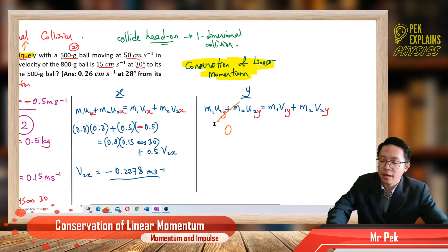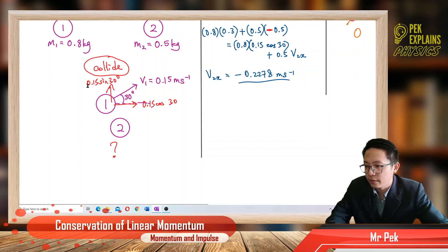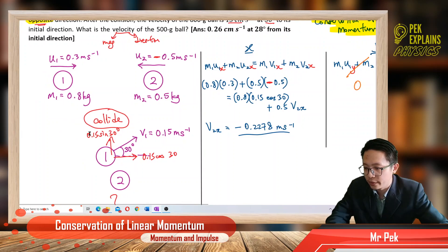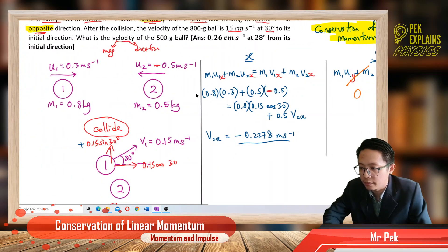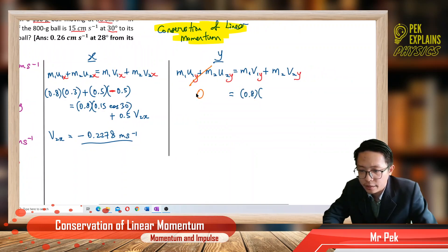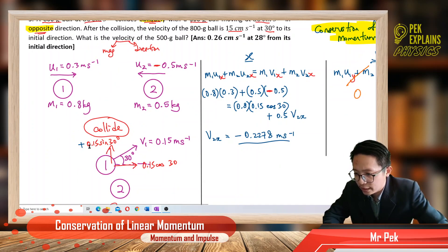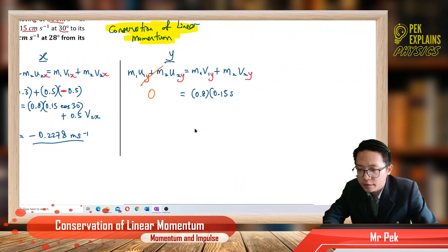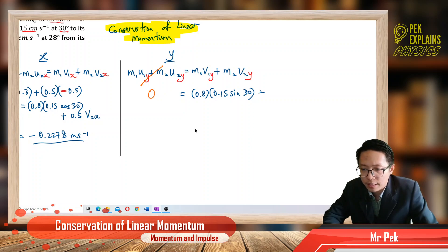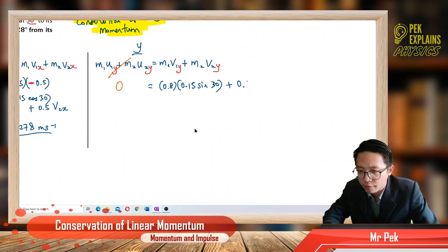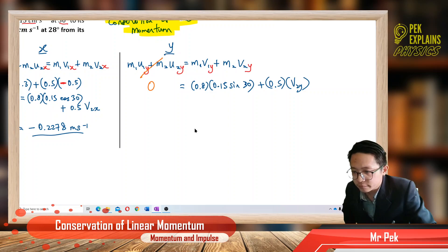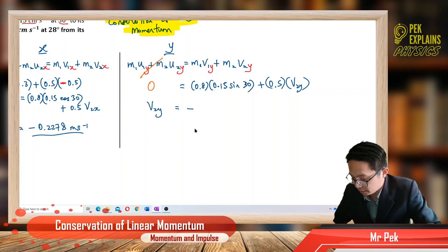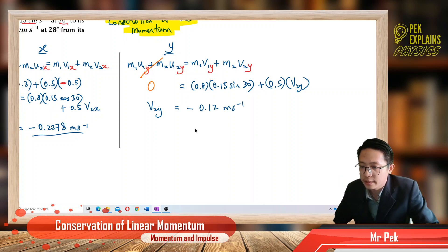After the collision, we have V1y equal to 0.15 sin 30, going up — so it's positive. So we write: 0 equals 0.8 times positive 0.15 sin 30 plus 0.5 times V2y. We want to find V2y. After solving, V2y equals negative 0.12 meters per second — negative means it is going downward.